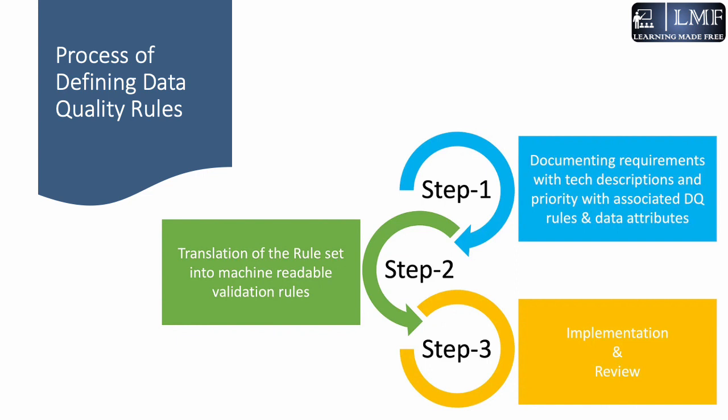The second step is the translation of these rulesets into machine-readable validation rules — you have a functional requirement and you build code for it. The third step is implementing these data quality rules and continuously reviewing them by a set of metrics.